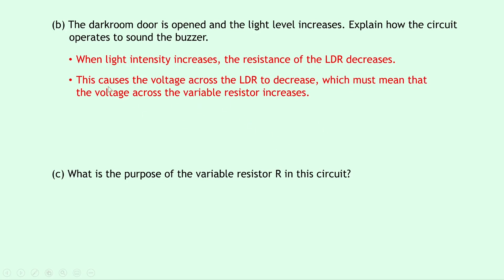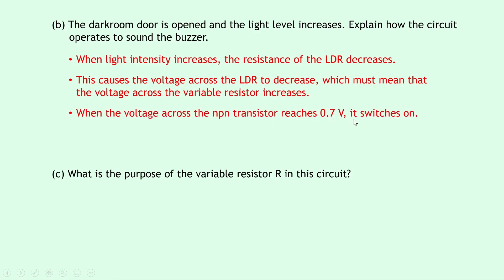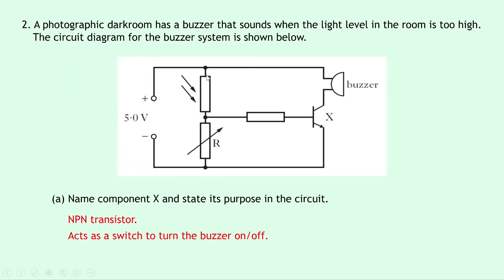Now we want to know what happens to the voltage across the variable resistor, which is the lower component. The voltage across it increases, which means that when the voltage across the NPN transistor reaches 0.7 volts, it switches on, and this in turn switches on the buzzer. Looking at the circuit: the voltage across the LDR decreases, so the variable resistor takes a greater share of the 5 volt supply. The voltage across the lower component and the transistor are the same, so when the transistor reaches 0.7 volts, it switches on the buzzer.